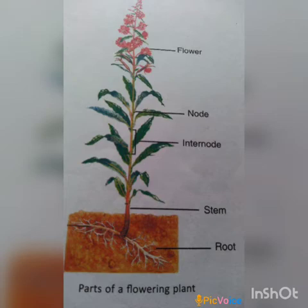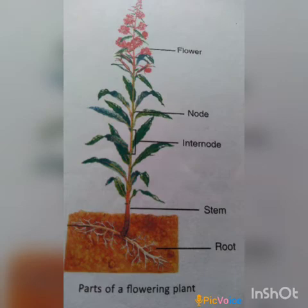Today I am going to explain the shoot system. The part of the plant which is found above the soil is known as the shoot system, and it consists of the stem, leaves, flowers, seeds and fruits.